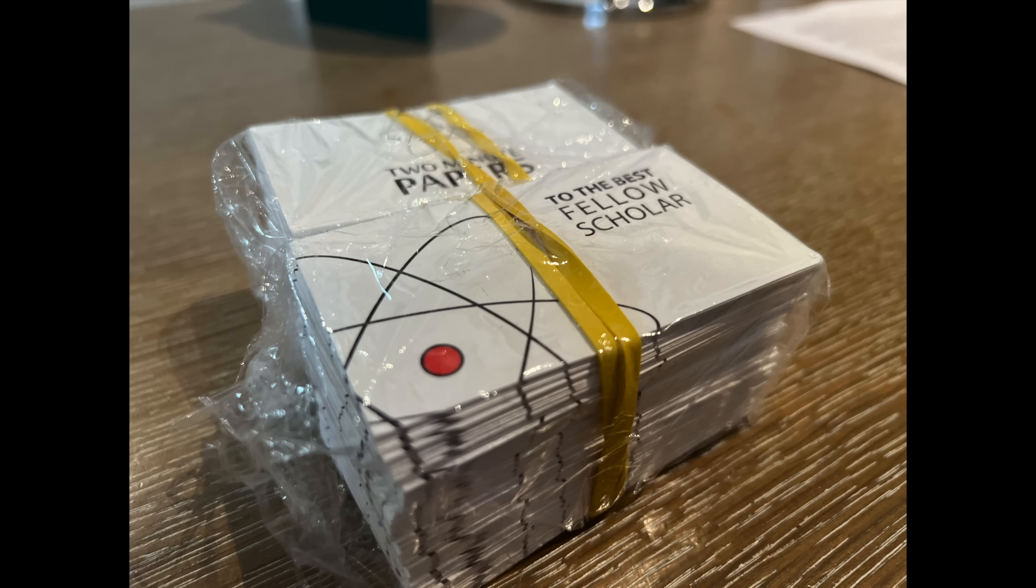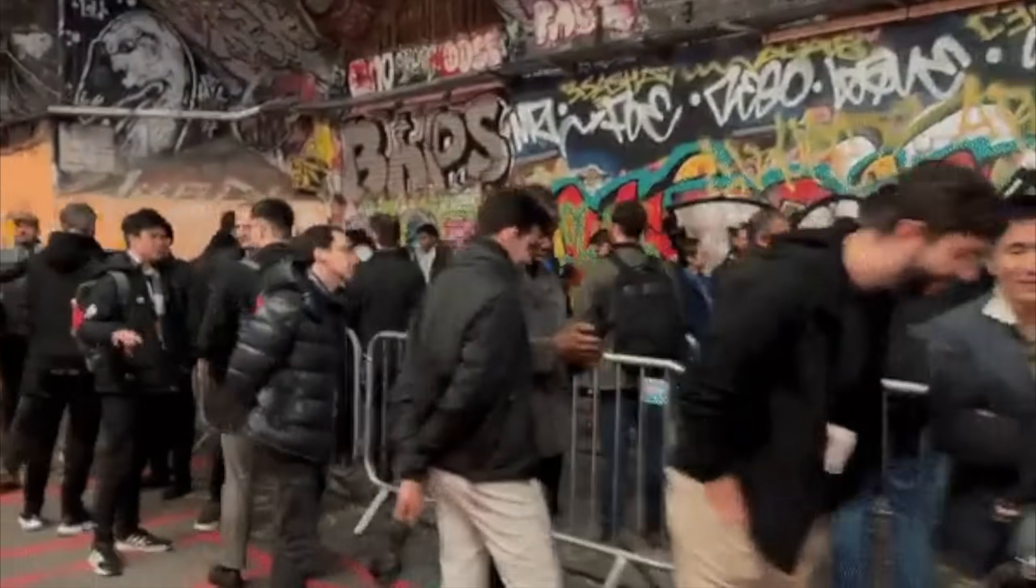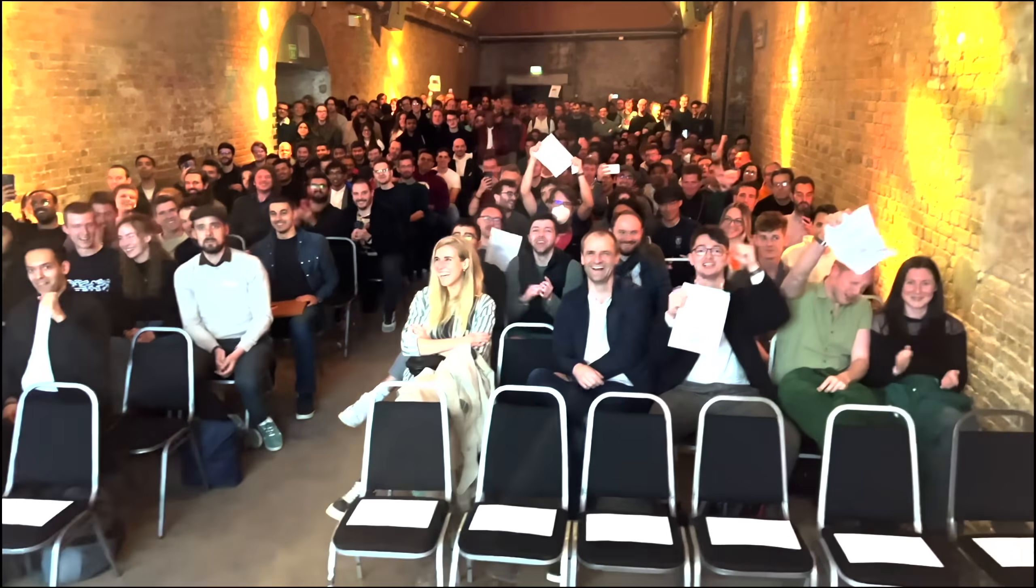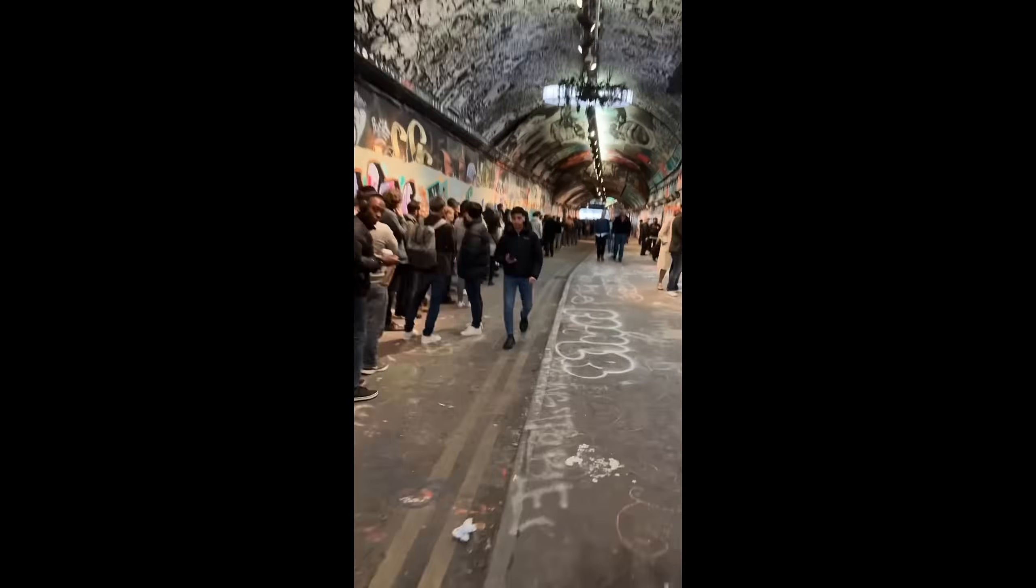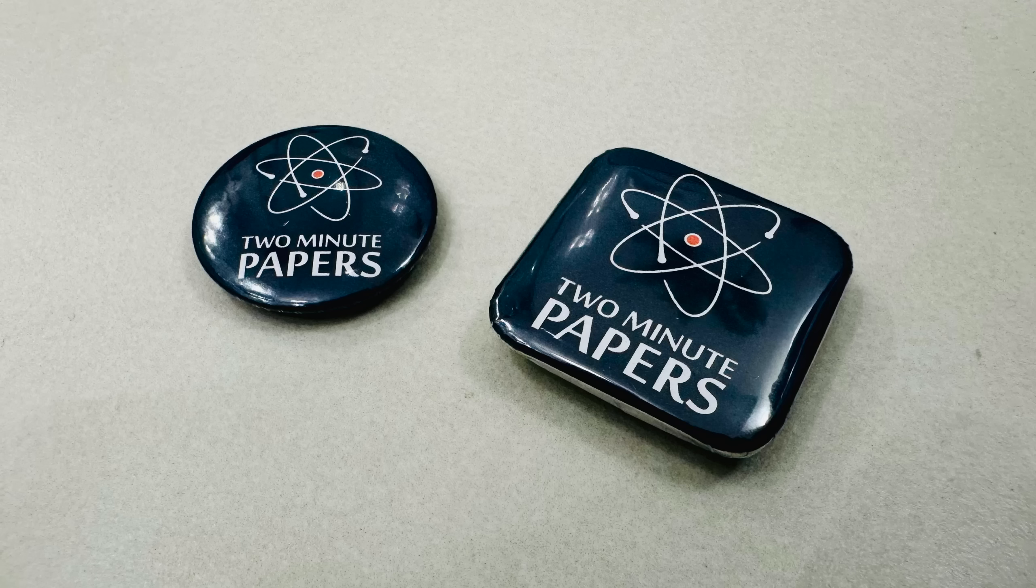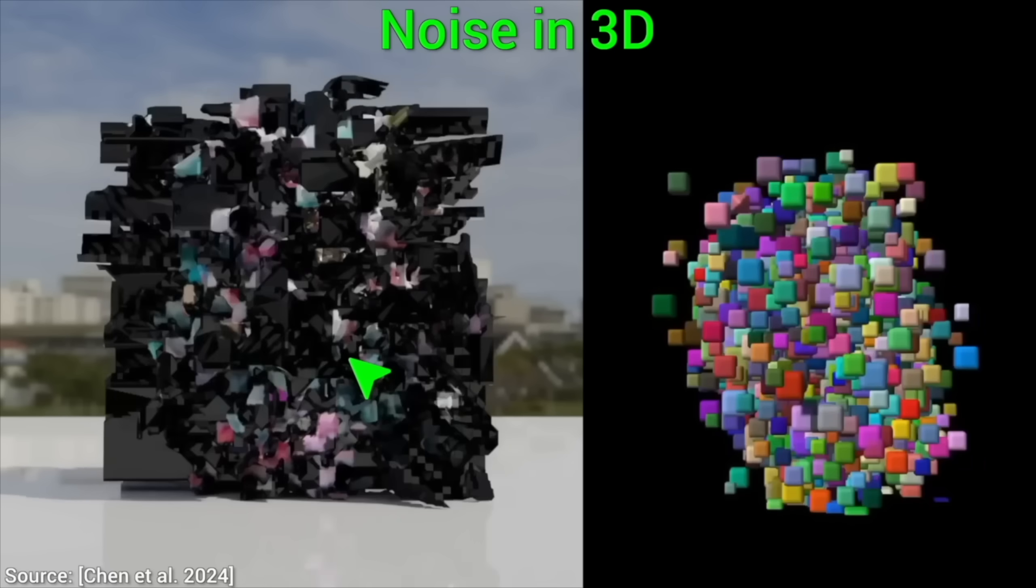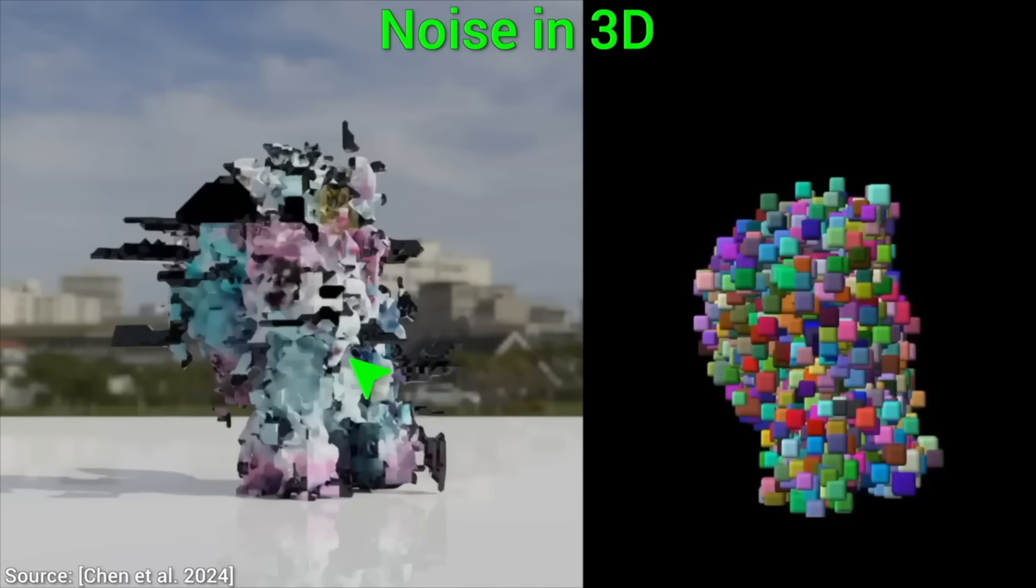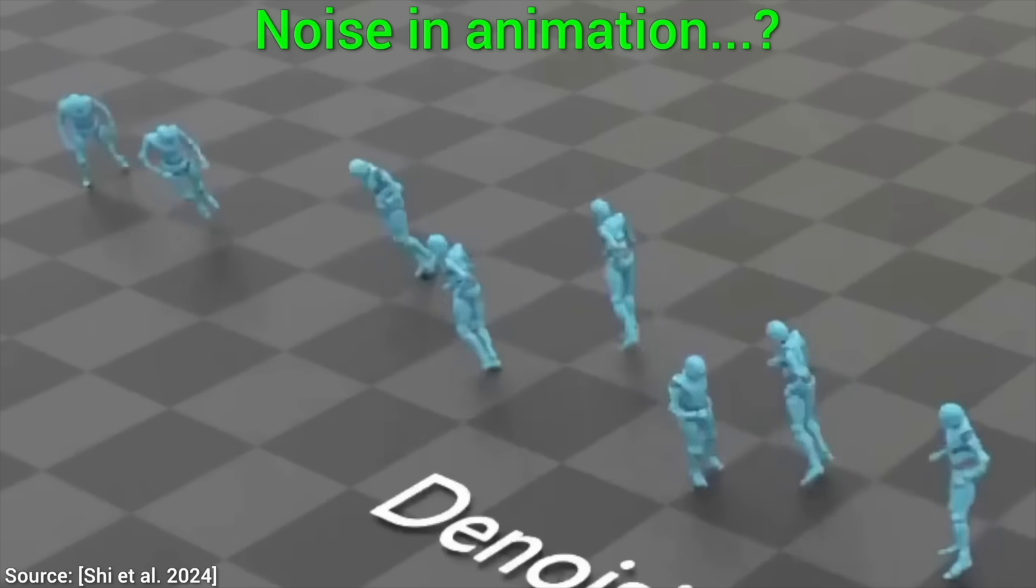Now, one more thing. I don't do real-life appearances very often. Last time I saw you fellow scholars in London and San Francisco. And I am coming over again. I will be at the GTC conference. Look for a fellow scholar marked with a Two Minute Papers badge. I can assure you that it is not an AI, it is me. If you come say hi, I will give you a small gift, limited edition, while supplies last. See you there!